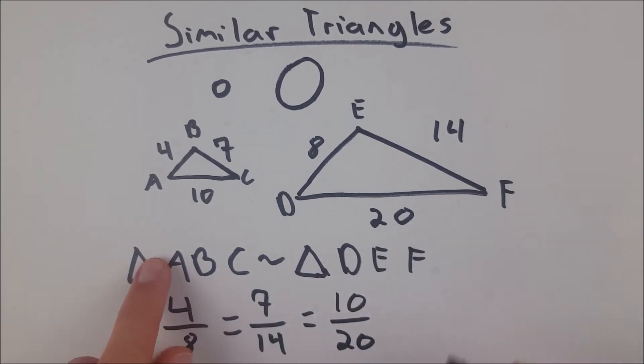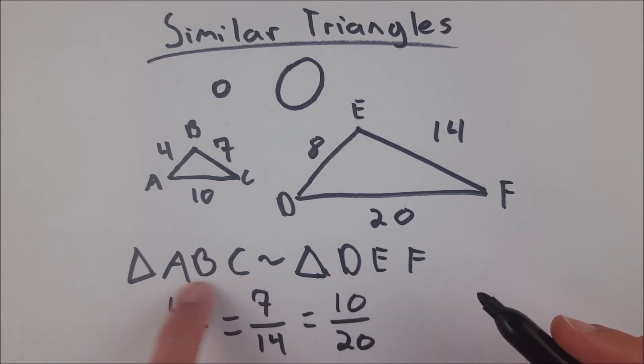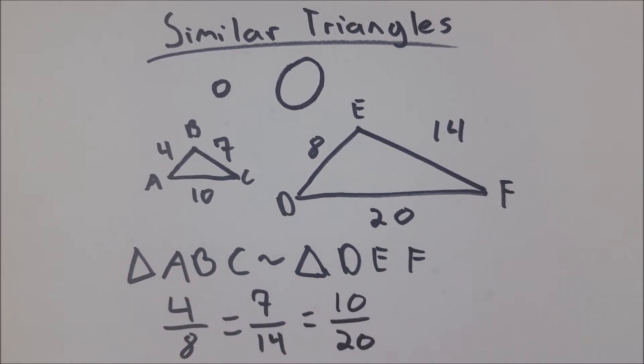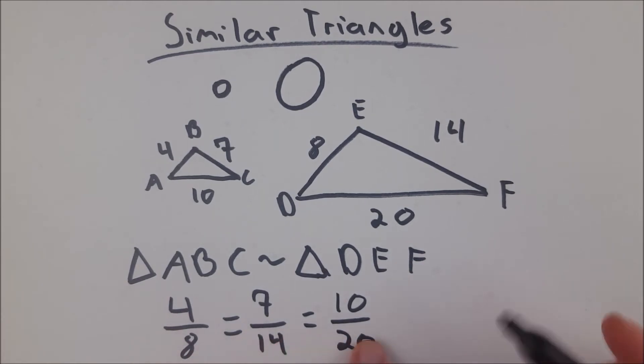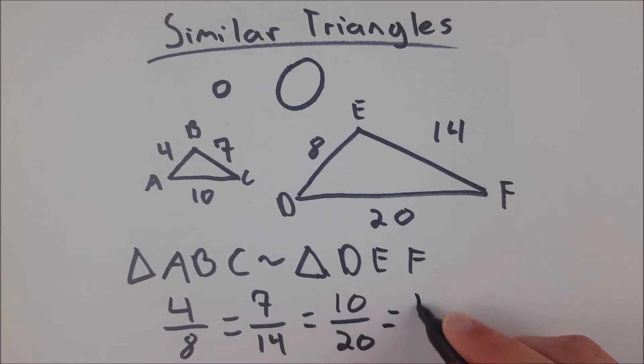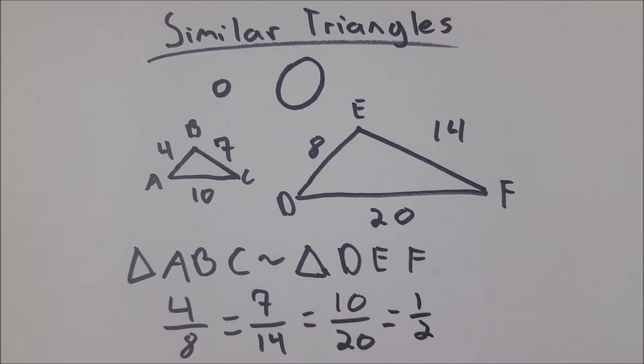You see how that works. Side AB corresponds to DE, BC to EF, and AC to DF. And we see that the ratios of those corresponding sides I just listed are all equal. They all happen in this case to be equal to one half.